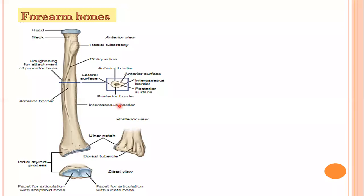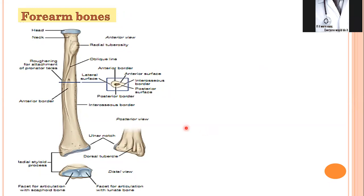At the lower end of the radius, there are many surfaces: a lateral surface where you see the styloid process, which is a projection; an inferior surface where you see the parts that articulate with the carpal bones; an anterior surface; a posterior surface where you see the tubercle, tendons, and grooves. On its medial surface at the lower end, there is a notch, and this notch makes a joint with the lower end of ulna. The upper end of radius also makes a joint with ulna, and the lower end also makes a joint.